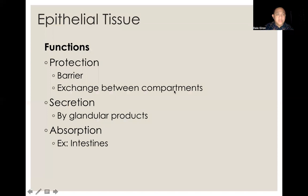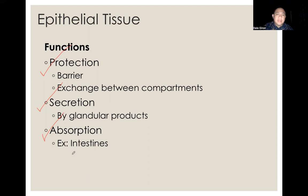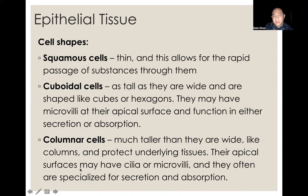This is just an overview of the epithelial tissue. By definition, what are its functions? It protects, serving as a barrier, and facilitates exchange between compartments. They are also for secretion — by glandular products, it could be serous, mucus, or a combination. And also for absorption, which is very much common in the small intestine, since the small intestine is an organ for reabsorption — reabsorbing what we ate or drank, then it goes to the blood circulation. All absorption happens in the small intestine.